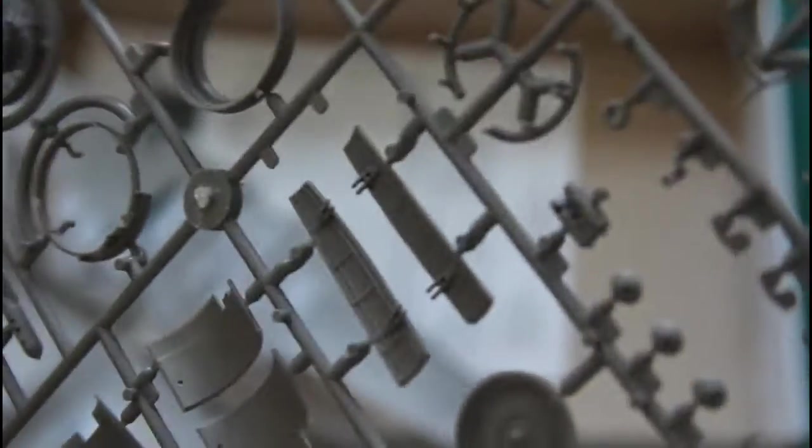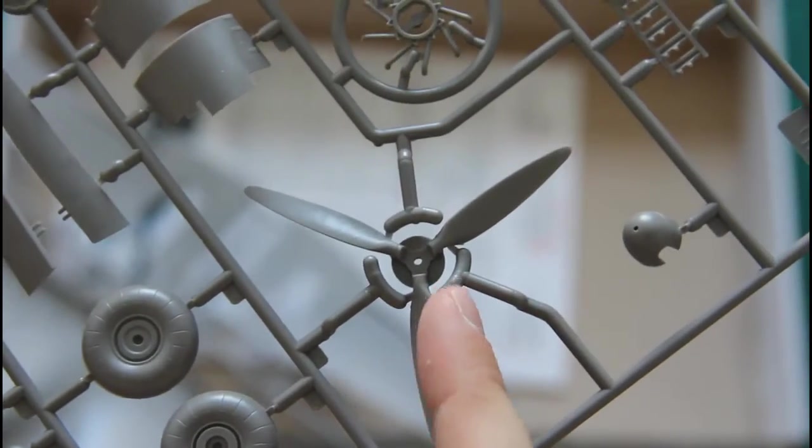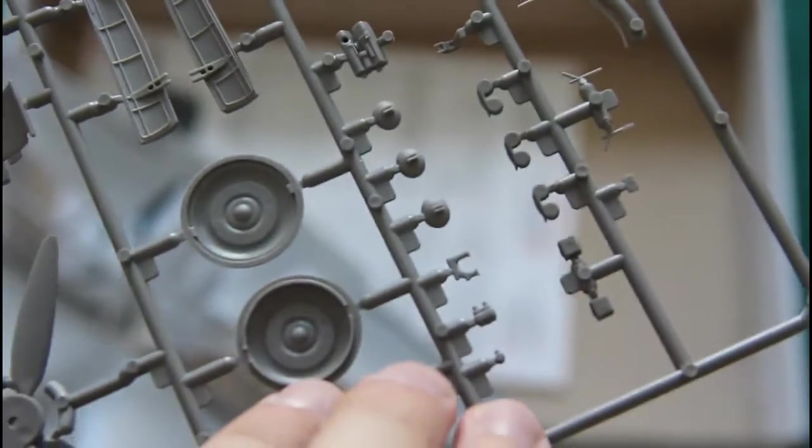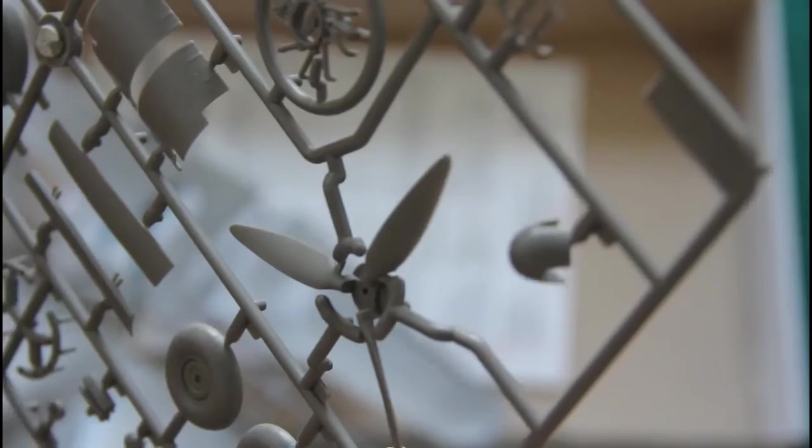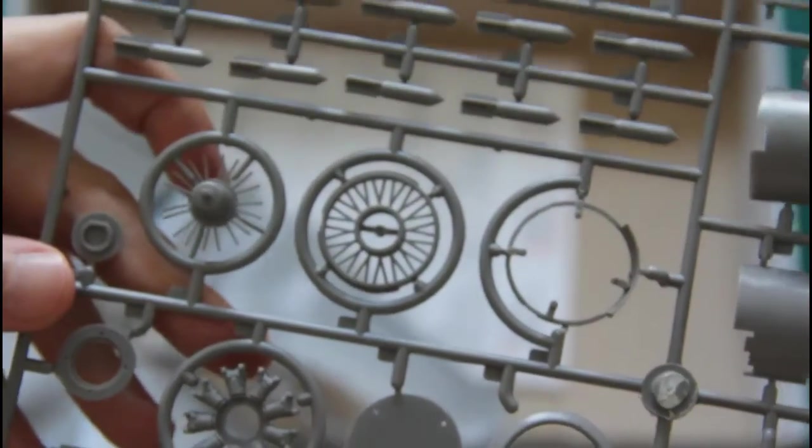Next we have two similar sprues. It's easy to guess that those are dedicated to the engine parts and landing gear parts. We have a one piece molded propeller. Wheels will be assembled from two pieces. Nevertheless I hope that resin alternatives will be available very soon. The engine itself is quite detailed for an out of the box version.